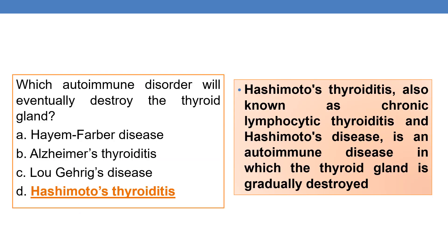Next question: which autoimmune disorder will eventually destroy the thyroid gland? The answer is Hashimoto's thyroiditis, also known as chronic lymphocytic thyroiditis or Hashimoto's disease. It is an autoimmune disease in which the thyroid gland is gradually destroyed.